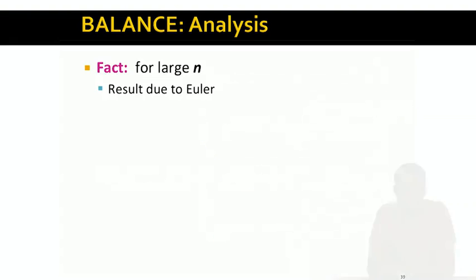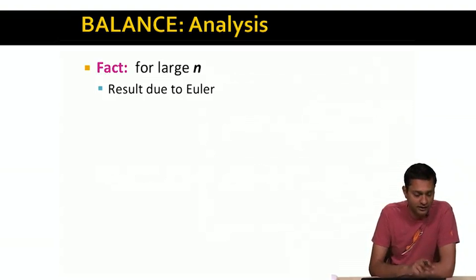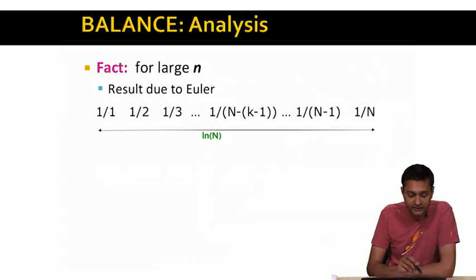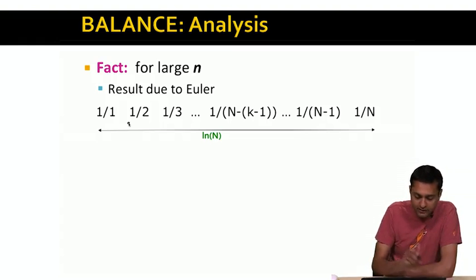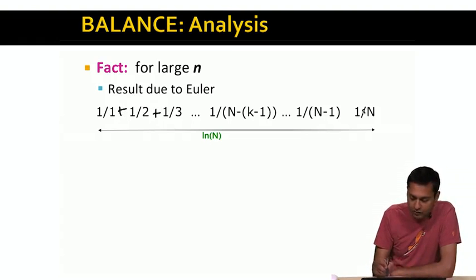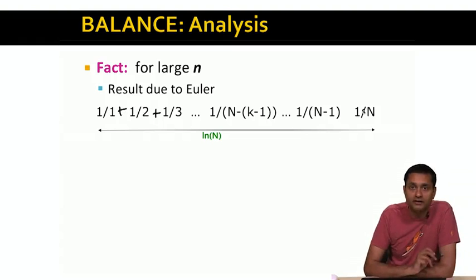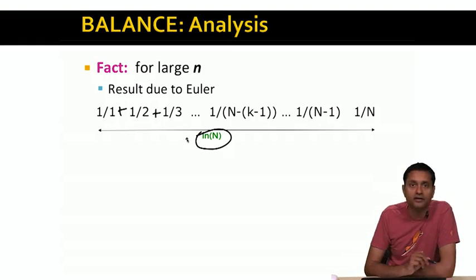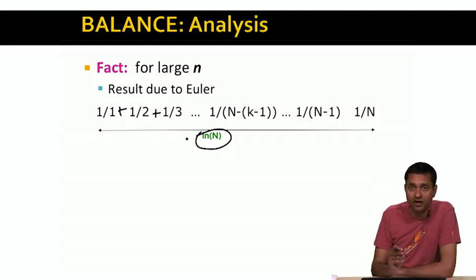There's a very famous result due to Euler that says for a really large N, the series 1 plus 1/2 plus 1/3 and so on sums to ln N, the natural logarithm of N. This is true up to a small additive constant, which we'll ignore.